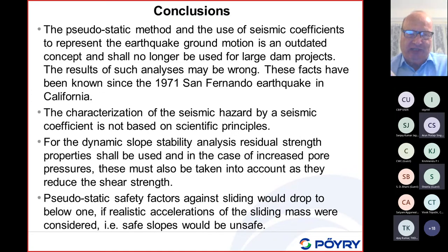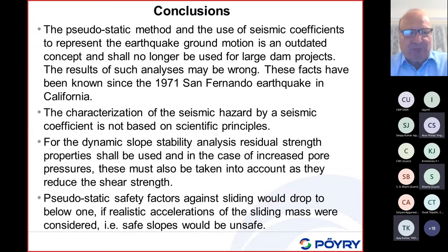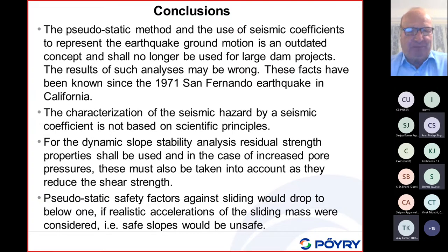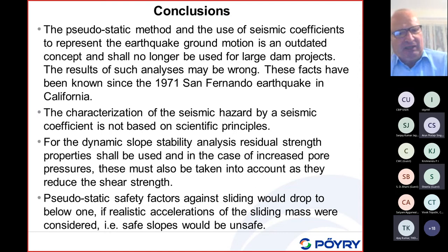Even if a pseudostatic method were used, we would still need to calculate the ground motion at the support of the structure being designed, and we would have to use much higher coefficients. As I mentioned, the results of such analysis may be wrong. These facts have been known since the 1971 San Fernando earthquake in California. For embankment dams, this is not a new science — people knew about structural dynamics 100 years ago. But as I said, people like this pseudostatic method. The characterization of seismic hazard by a seismic coefficient is basically not based on scientific principles. I'm reviewing quite a few papers, and once I reviewed a paper from Jordan where seismicity in the Jordan Valley is quite high — they calculated 0.7 G peak ground acceleration. But the engineer then wanted to do a pseudostatic analysis and said that 0.7 G is equivalent to a seismic coefficient of 0.1. Of course, this kind of correlation is prohibited.